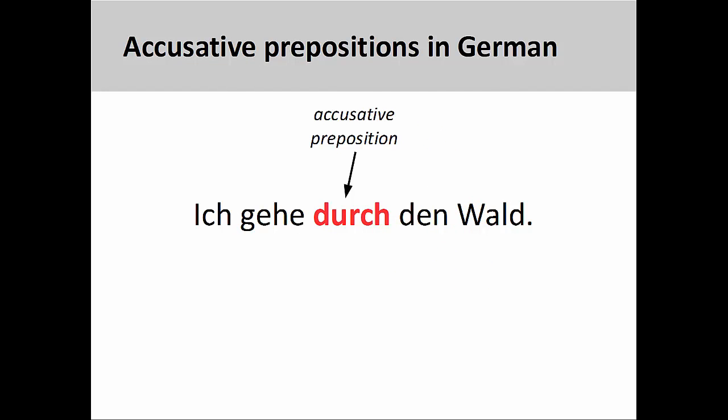German also has prepositions, which are classified as being either accusative, dative, or two-way — either accusative or dative. The preposition you see on the screen, 'durch', is an accusative preposition meaning 'through'.